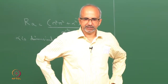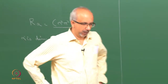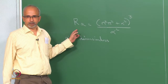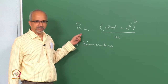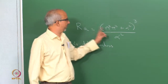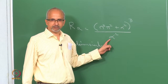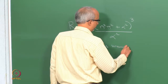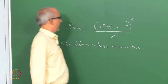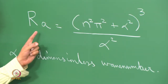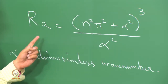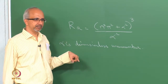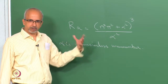Towards the end of the last lecture, what we had derived was this particular relationship for the Rayleigh number. This dimensionless number, the Rayleigh number, is given by (n² π² + α²)³ divided by α², where α here is a dimensionless wave number.